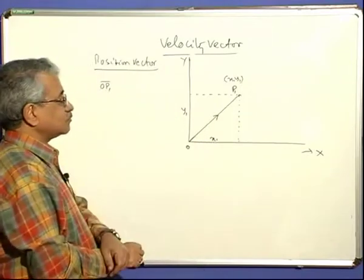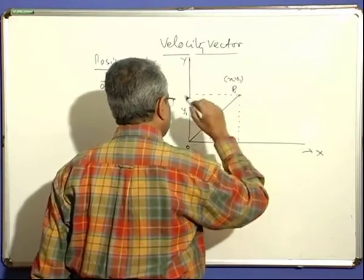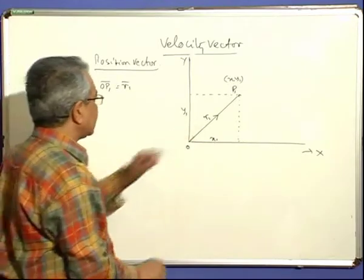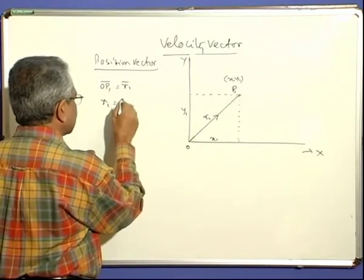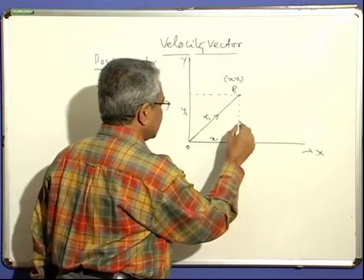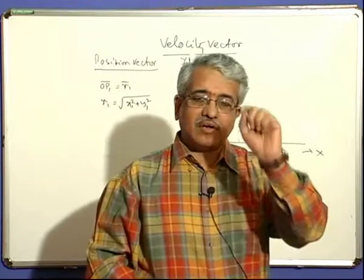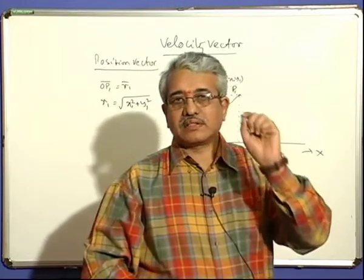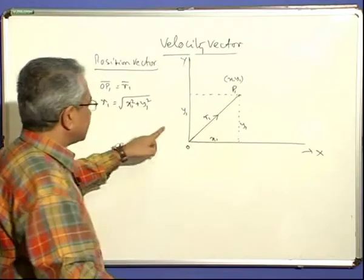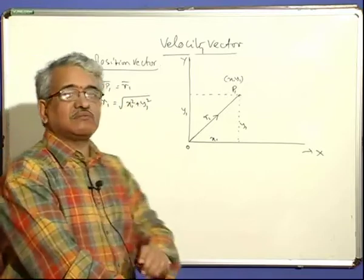We can write this also. The position vector magnitude R1 equals the distance OP1. From geometry, R1 is the square root of x1 squared plus y1 squared, since x1 squared plus y1 squared equals R1 squared. So every point in space can be positioned with reference to a reference frame — its coordinates give us the magnitude of its distance from the origin, and in vector notation we can write it accordingly. That is what we mean by the position vector.